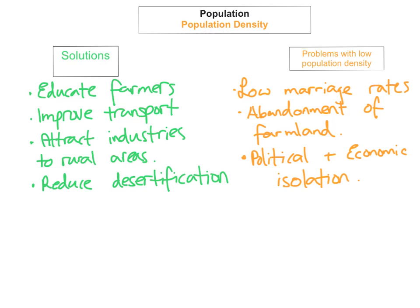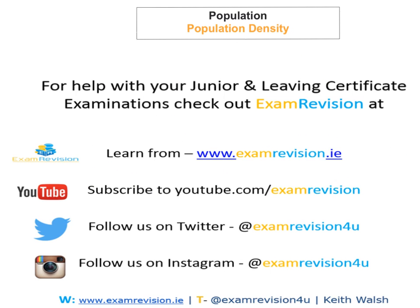These solutions are not easy to implement — they require full government backing, money, and investment, which is really difficult for a very poor country like Mali. It creates a domino effect: desertification leads to food shortages, which leads to malnutrition, which puts pressure on the already inadequate health system, resulting in the spread of disease and a higher child mortality rate, creating even more problems.